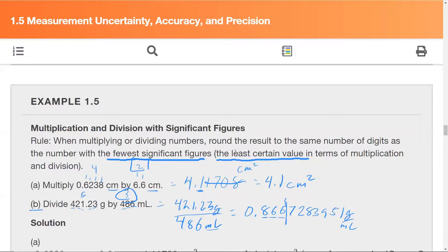So we're cutting it off right there. What do we need to do though? Since this is a seven, that means we need to round up. And so the answer is 0.867, and we have to keep those units, grams per milliliter.